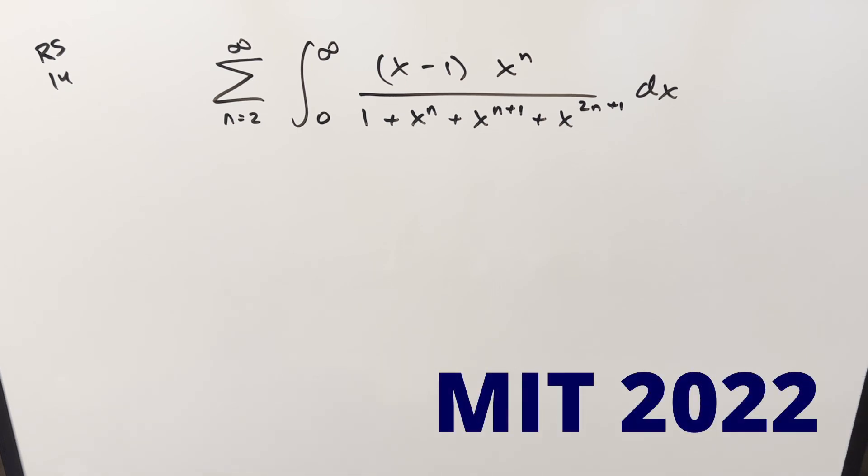Okay, we have a good one here today from MIT 2022 regular season number 14. We've got the sum from 2 to infinity of the integral from 0 to infinity, x minus 1 times x to the n over all this stuff, dx.